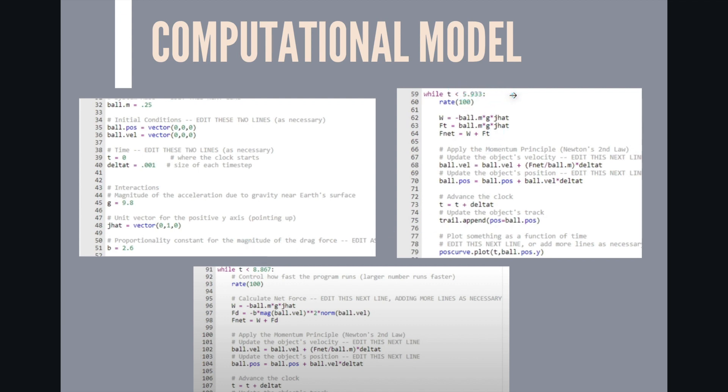Here we have that the time is less than 5.93. The work equals the force in tension. The only difference is the negative sign here and then the net force we add both of these forces. We have the velocity as well as the position for the formula and here we change the time to t is less than 8.86. We edited the work and the fd and then we change the net force and here we updated the velocity and the position.